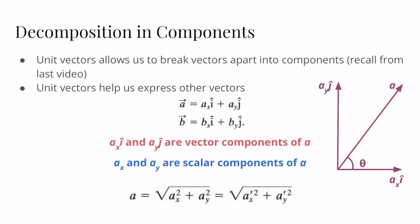Vectors can be decomposed into their components, and unit vectors allow us to break vectors apart into those components. If you haven't watched the last video, we went over components there in more detail. Unit vectors help us express other vectors — for example, we have a vector A defined by its x and y components, where Ax·i-hat and Ay·j-hat are the vector components of A, and i-hat and j-hat are just the unit vectors we use to define the direction.